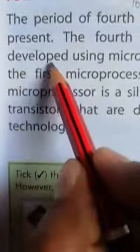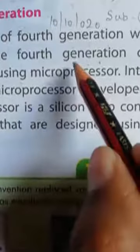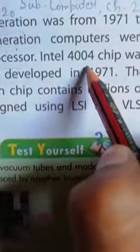4th generation means 4th पीढ़ी, developed means विकसित, using means प्रयोग microprocessor. Microprocessor का उपयोग करके 4th पीढ़ी के computer विकसित किये गए थे. Intel 4004 chip was the first microprocessor developed in 1971.